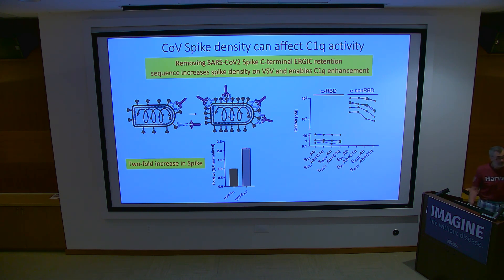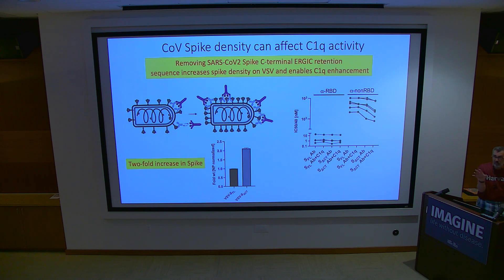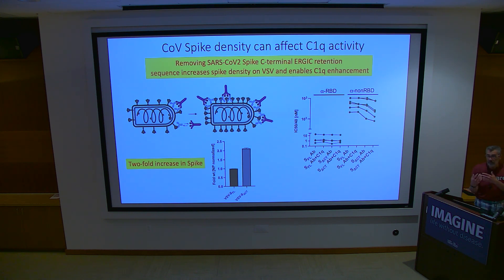With antibodies against the receptor binding domain, you see no C1Q effect. With antibodies against other domains on the spike, you do see an effect, but only when the spike is denser on VSV. The geometry of the viral receptor protein target is really important to the C1Q effect — a single interaction isn't enough.